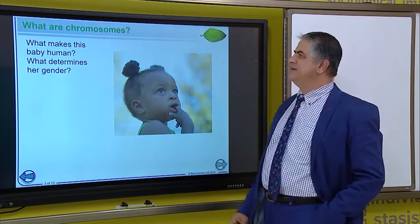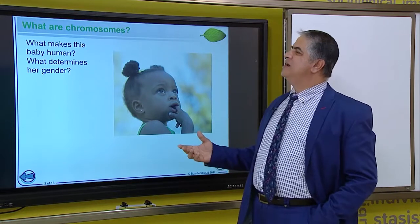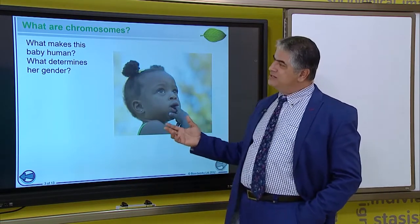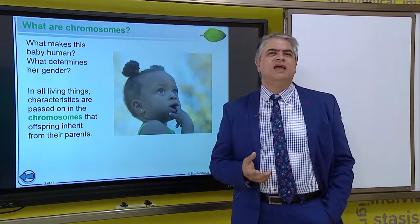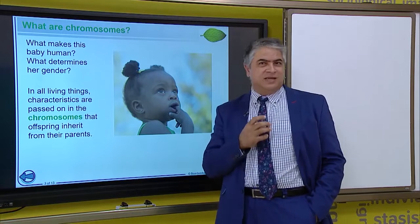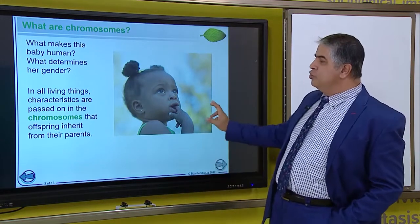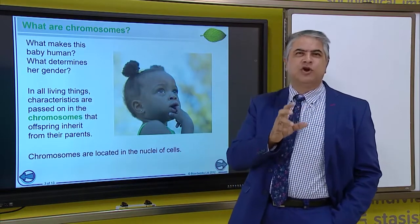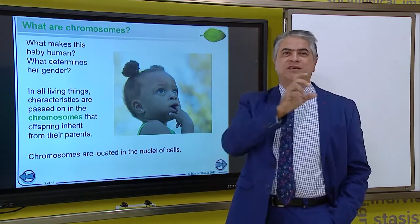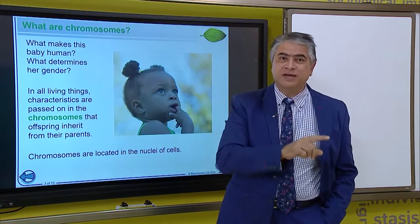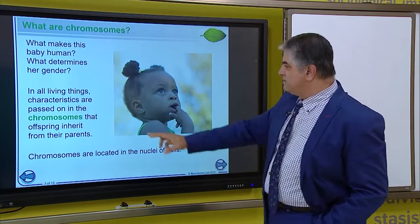Let's start this journey. What is a chromosome? This little baby. We need to understand what makes her human. We need to understand why is she a girl. All living organisms have characteristics. Now, these characteristics are passed over from the parent to the child. And in humans, there are 46 chromosomes. 23 of the chromosomes are given from the parent to the child by the mother. And 23 are given from the father to the offspring, which is the baby.